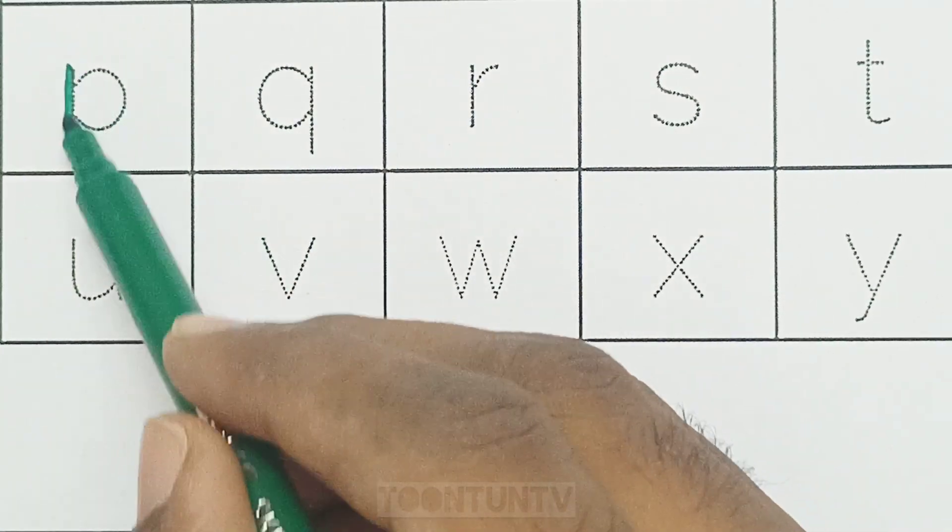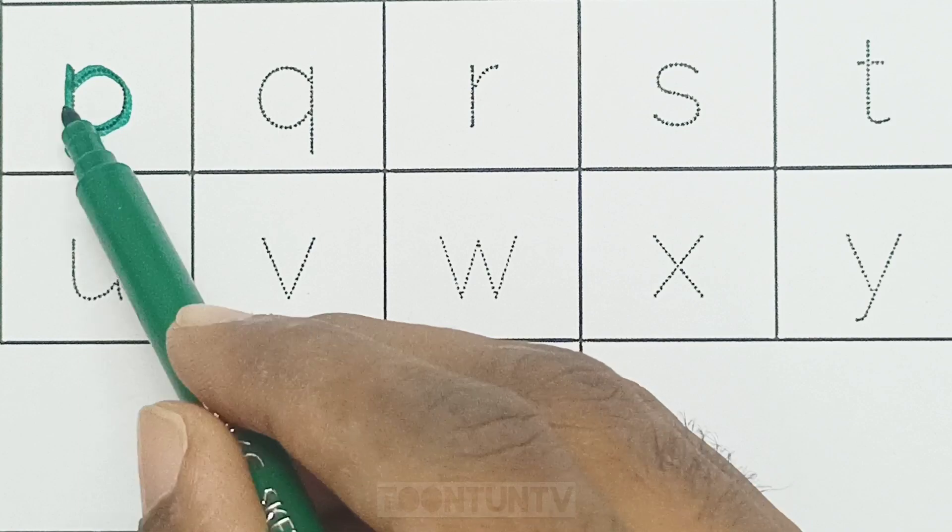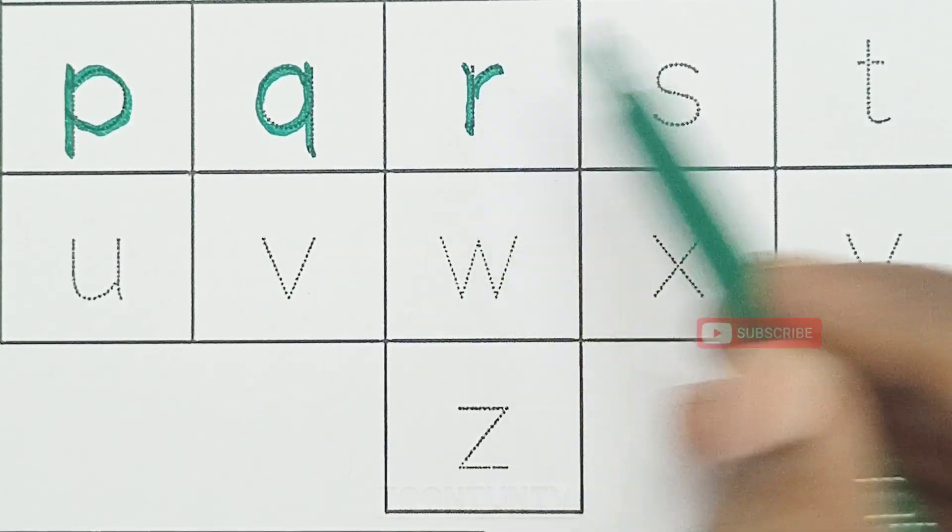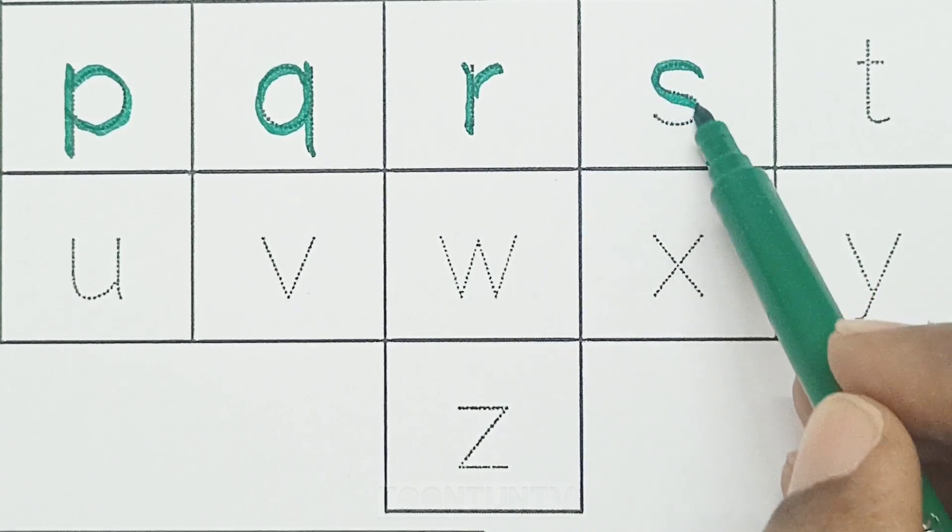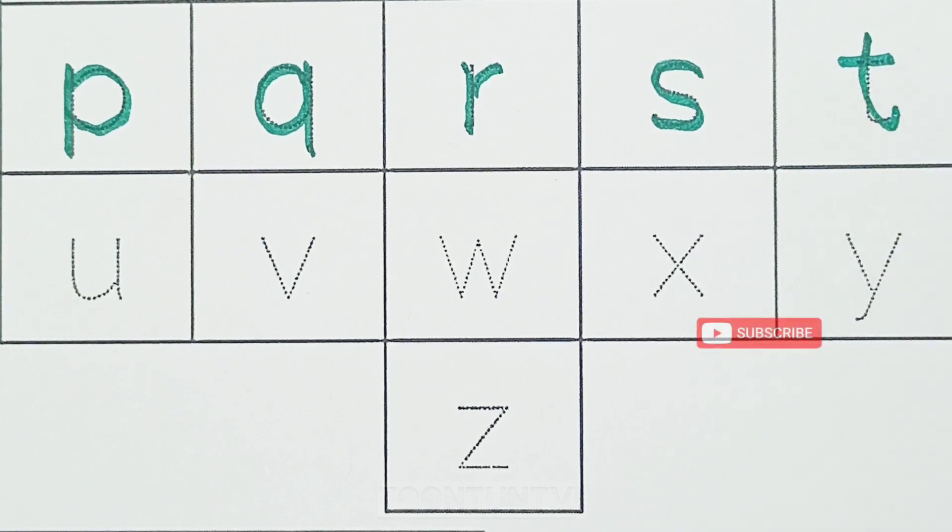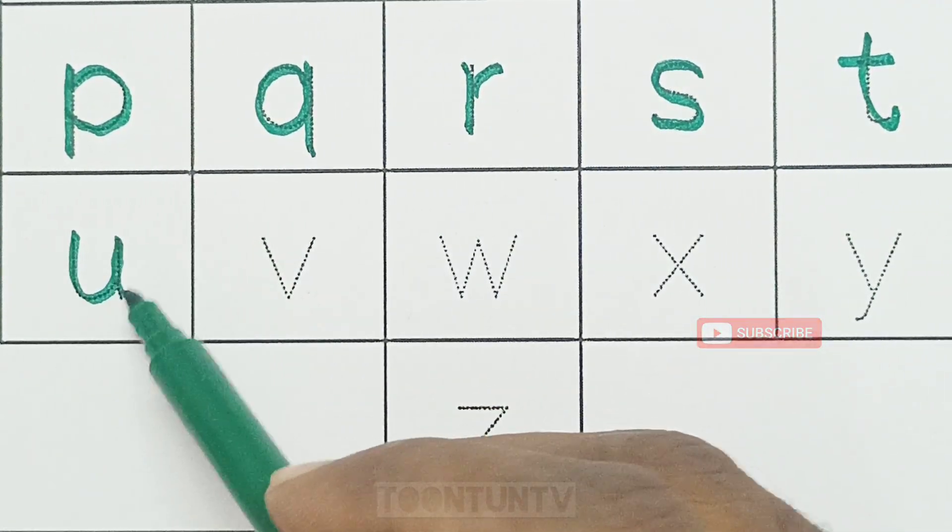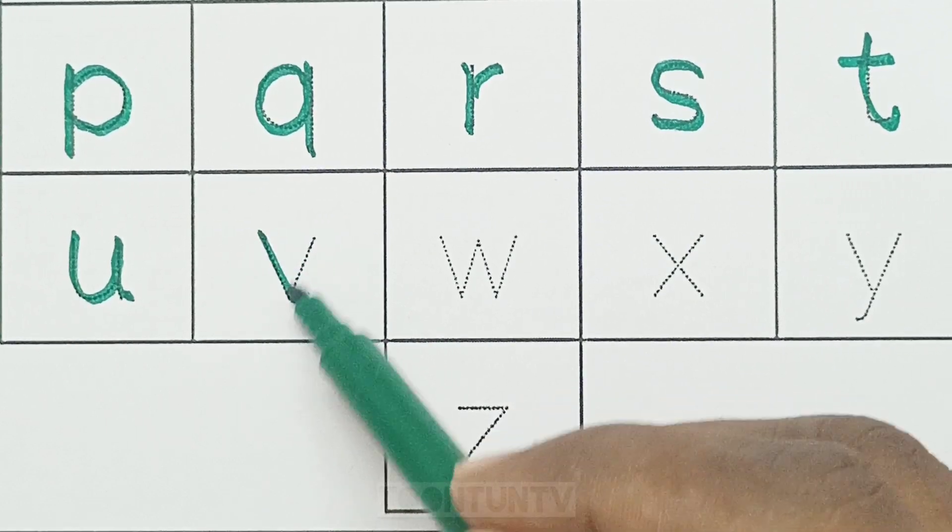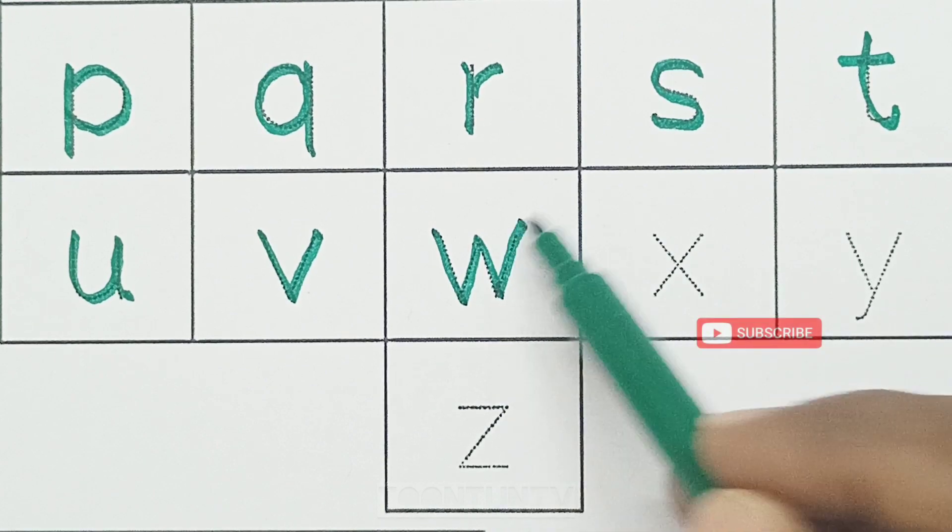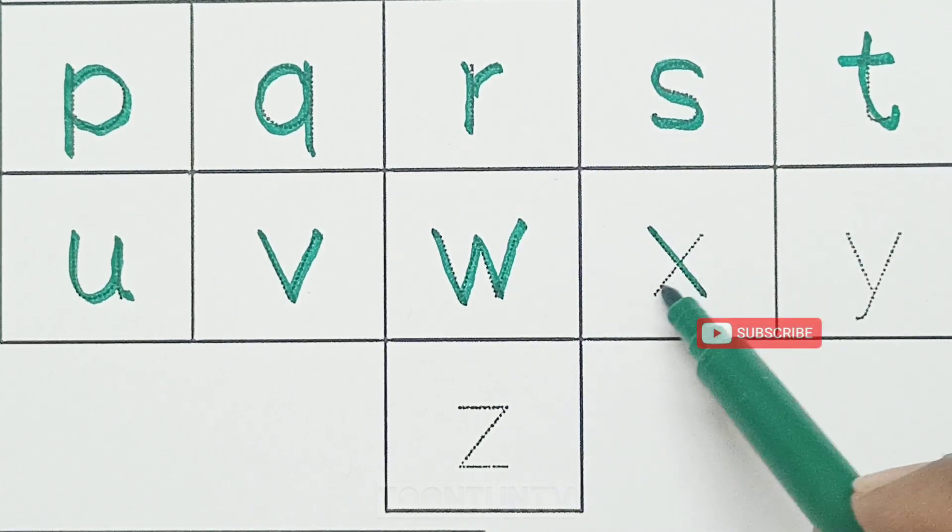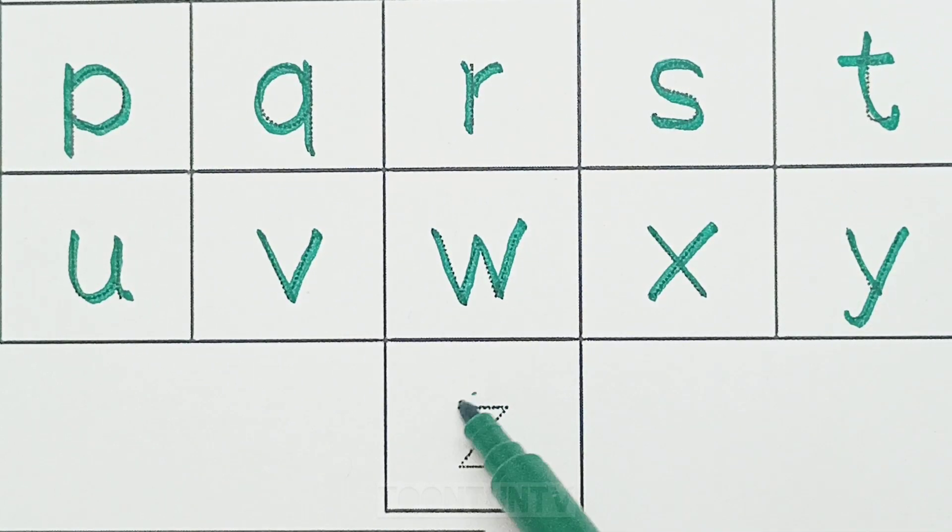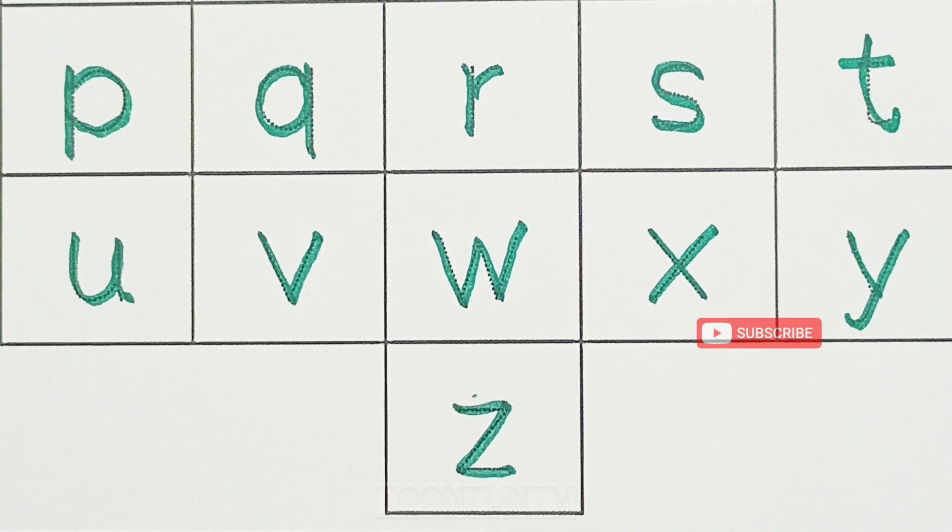P for parrot, Q for queen, R for rose, S for sunshine, T for tiger, U for umbrella, V for van, W for watch, X for xylophone, Y for yoga, Z for zebra.